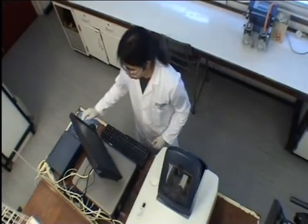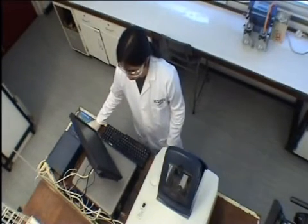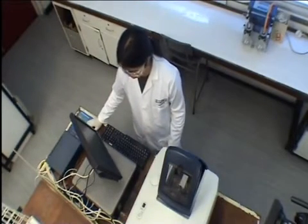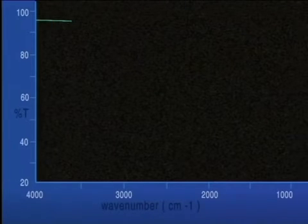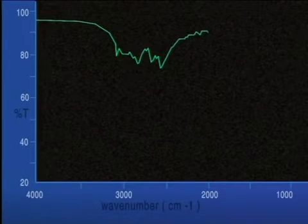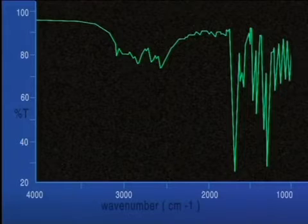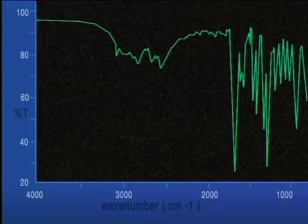Details of the scan are entered into the computer. The spectrum of the sample is obtained within a few seconds. The wavenumbers of the more significant peaks can be labelled onto the spectrum. This helps the chemist to interpret the data.